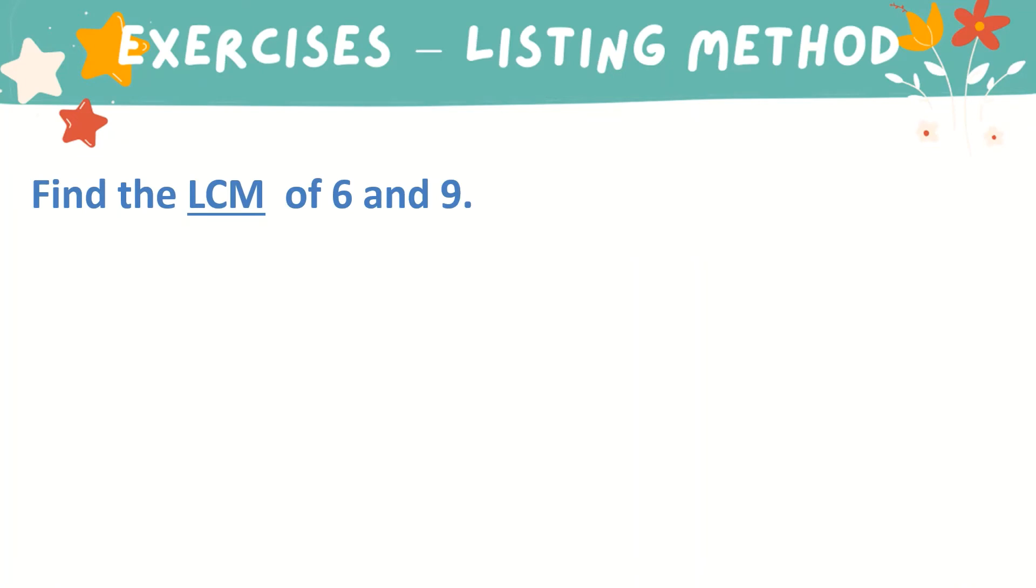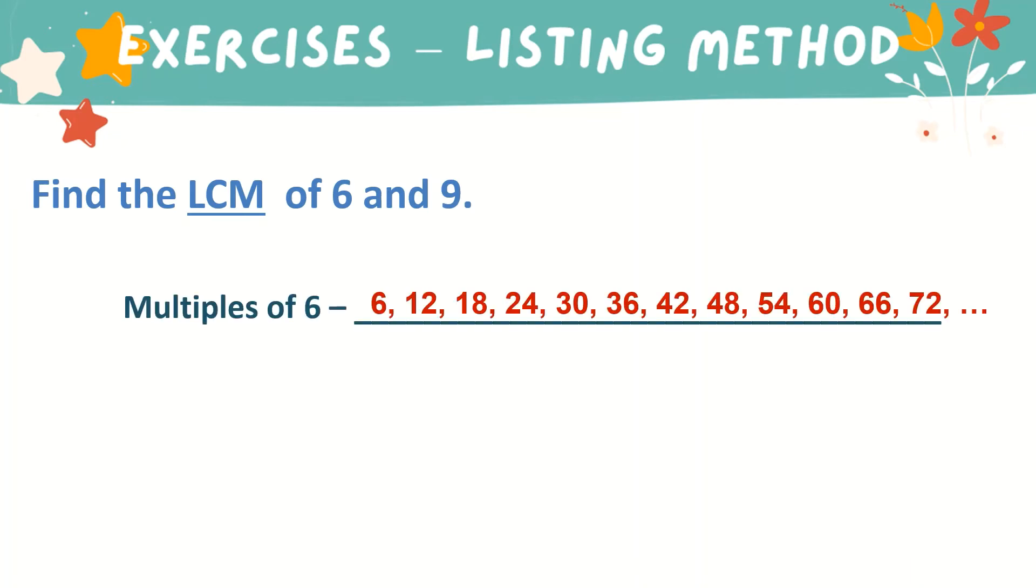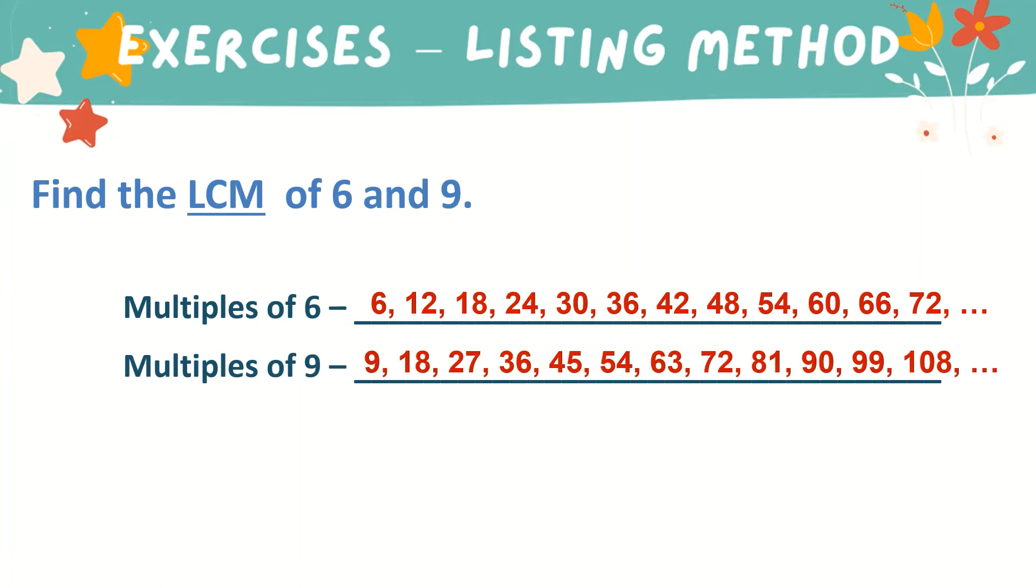Let's have more exercises. Let's find the LCM of 6 and 9 using the Listing Method. These are the multiples of 6. And these are the multiples of 9. Common multiples of 6 and 9, we have 18. What else? Yes, 36.